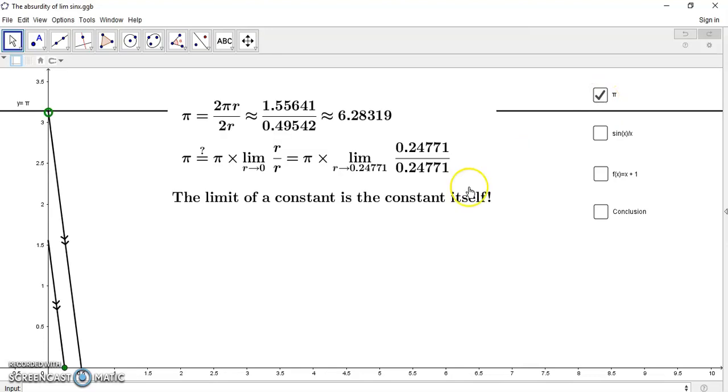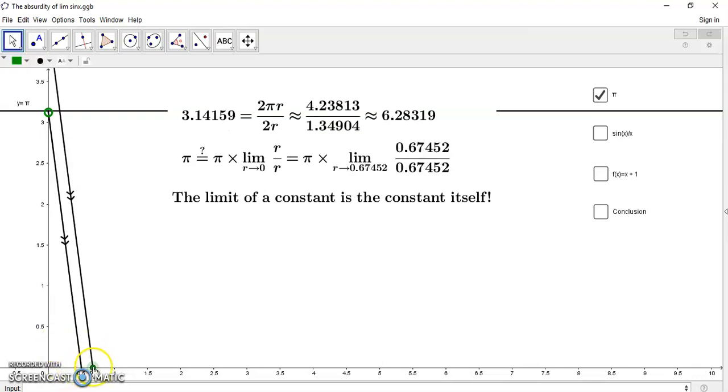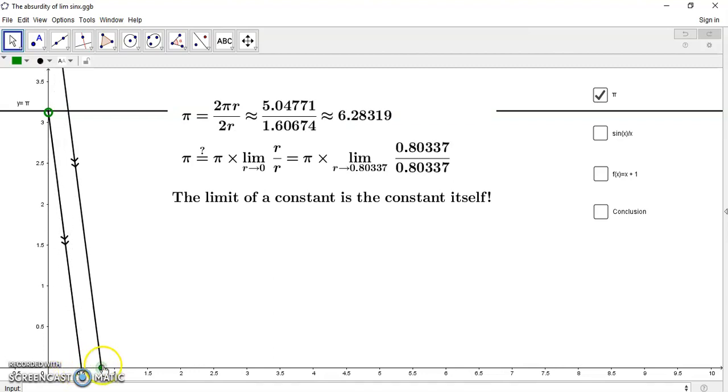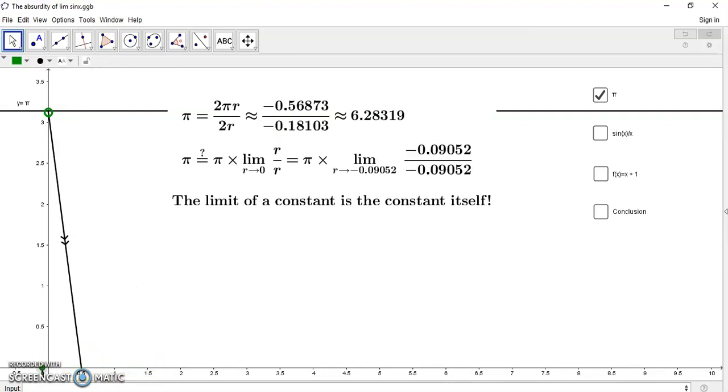Now, if we take a look at the constant pi and we plot the circumference on the y-axis and the diameter on the x-axis, then what we have is the constant pi.